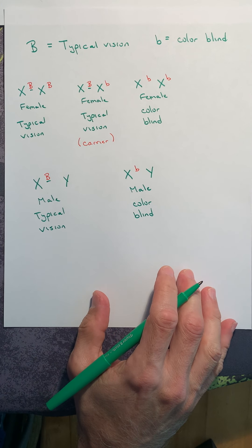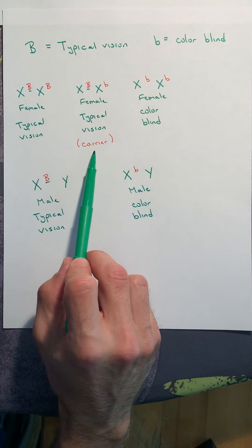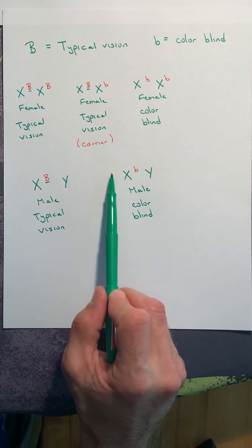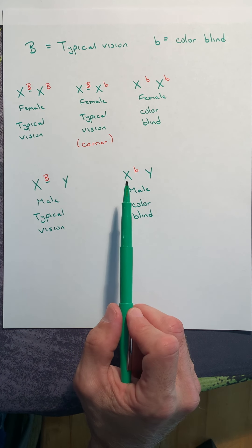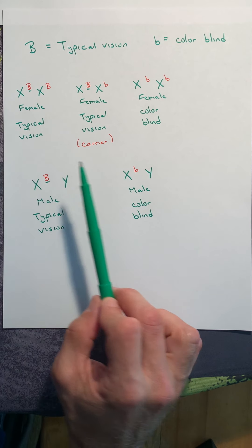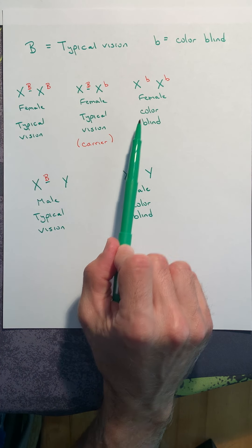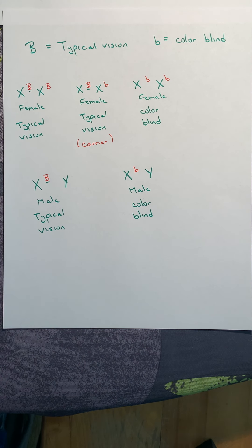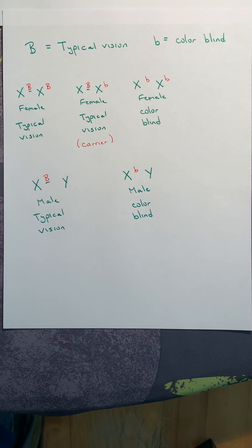So notice, when it comes to sex-linked traits, there's no such thing as a carrier male. We can't hide a second allele because we only have one X, because we're male. So when we do these sex-linked genetics problems, there's always five choices. There's three choices for the female, and there's two choices for the male. All right, please include this in your notes, and then we'll do a couple of practice problems after this, and then we'll do our genetics problem set number three. Excellent. Talk to you soon.